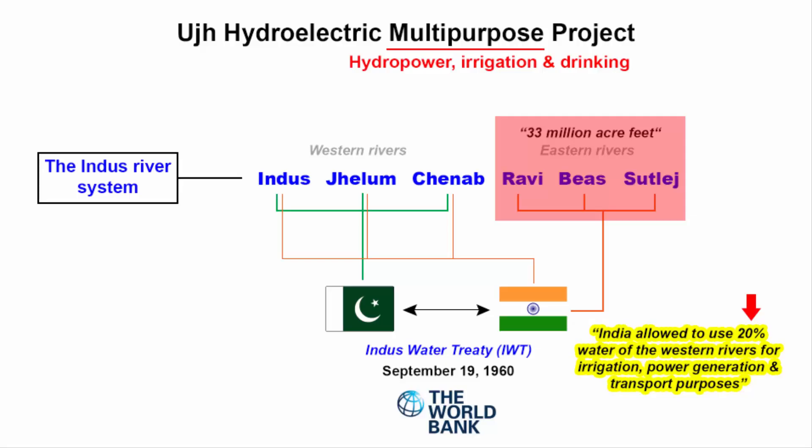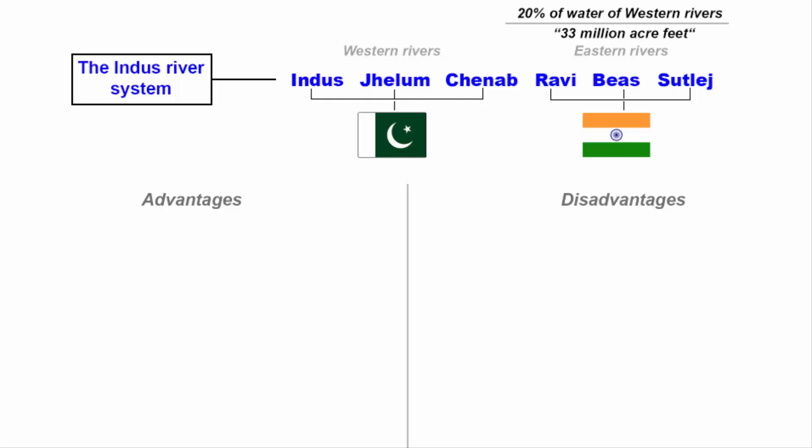Over the past few years, as the political relationship between India and Pakistan has declined, India's plan has been to increase the utilization of water from the eastern rivers, on which India has full rights under the Indus Water Treaty. Regarding this dam and others planned for Jammu and Kashmir, the key facts around economic opportunities, environmental concerns, and cross-border politics and diplomacy will now be laid out.